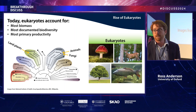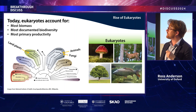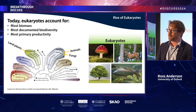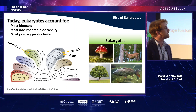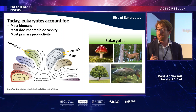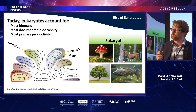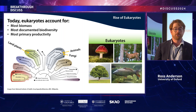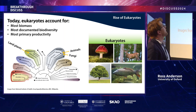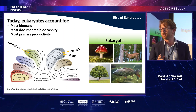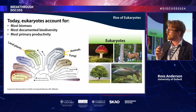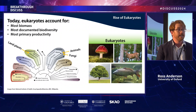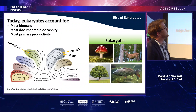If you think about our planet today, it is dominated by eukaryotes. If you look at the biosphere, eukaryotes account for most biomass, most documented biodiversity, and most primary productivity. They're key players on our planet today.